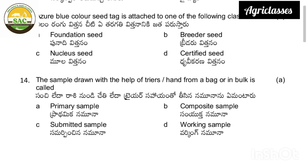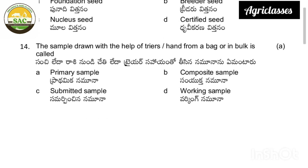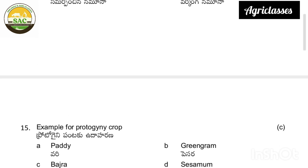The correct answer is primary sample. When seeds are drawn from bulk, that first drawn sample is the primary sample.